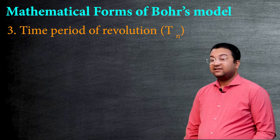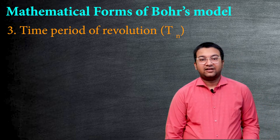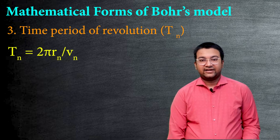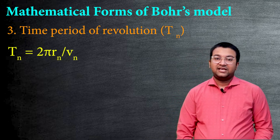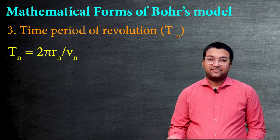Next up is the time period of revolution of electron. That is given as Tn. Tn can be written as 2πrn upon Vn, where rn is the radius of that orbit and Vn is the velocity of the electron in that particular orbit.